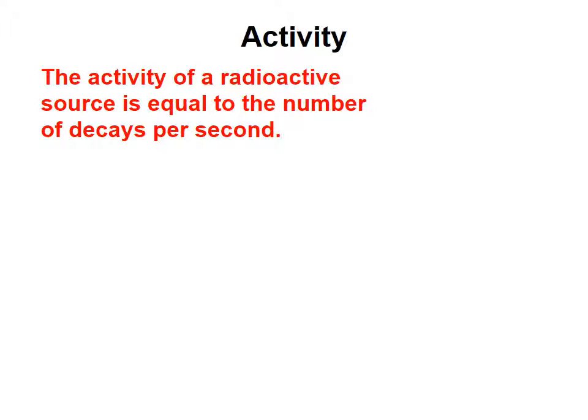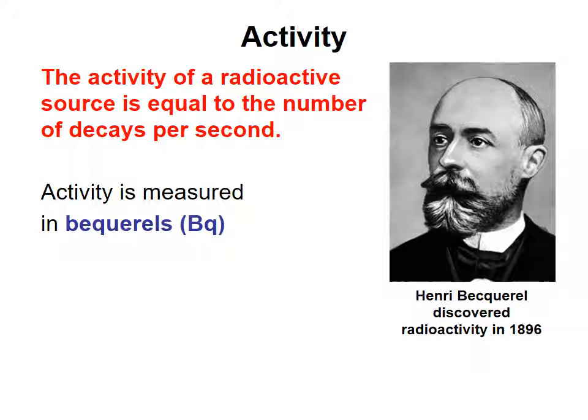So in terms of nuclear activity, activity of a radioactive source is equal to the number of decays per second. And it's measured in the unit of Becquerels, after Henry Becquerel, which we looked at last lesson, who discovered radioactivity in the end of the 19th century. And one Becquerel means one decay per second. When we say decay, it means it's the transformation of an element into another element, which is more stable, by emitting either alpha, beta, or gamma radiation.